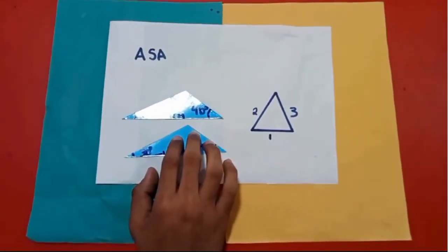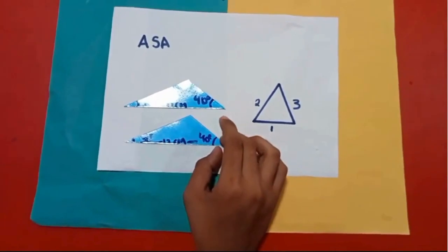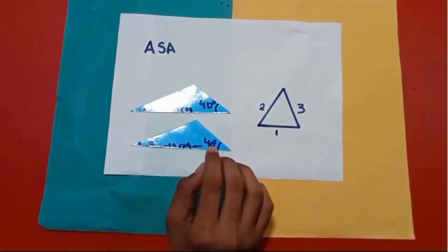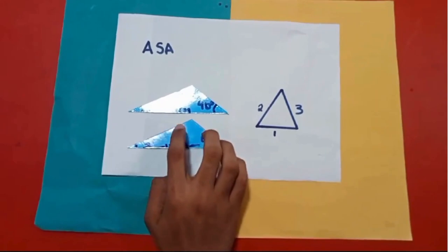Now, the exact triangle will be formed exactly the same. The size and the shape will be the same.